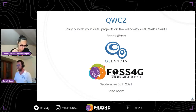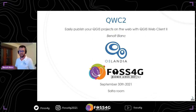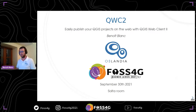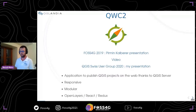Before starting, you can find some presentations that have been done by Pyramin Kalbauer from Sourcepol for FOSS4G 2019, and my presentation for the QGIS Swiss user group last year. So, what is QGIS Web Client? It's a web mapping application to publish QGIS projects on the web thanks to QGIS server. It's a responsive application, so you can use it on desktop or on mobile.